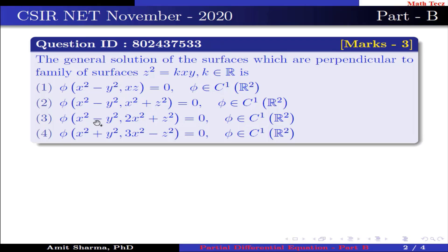Option 3: φ(x² - y², 2x² + z²) = 0, φ ∈ C¹(R²).